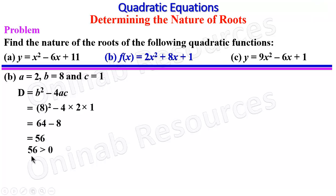And this is positive, which means 56 > 0. Therefore, the roots are real and distinct, meaning the quadratic function has two different real roots.